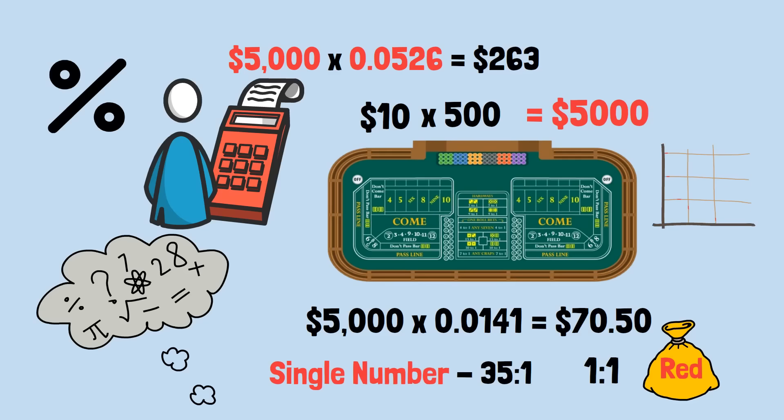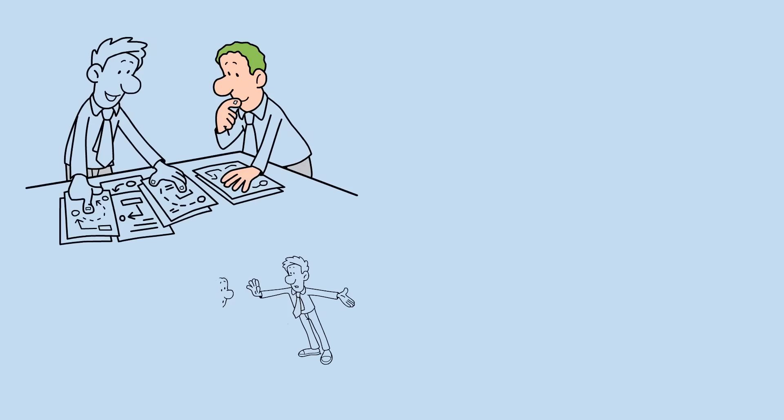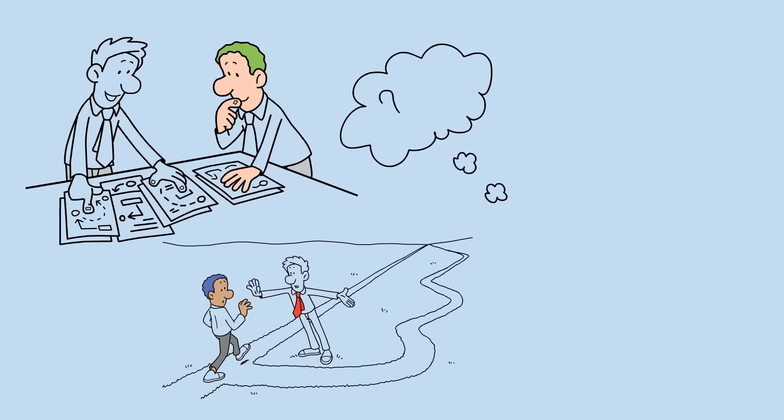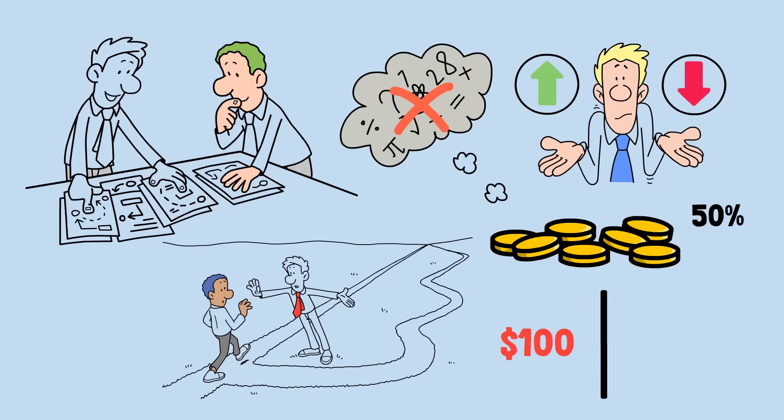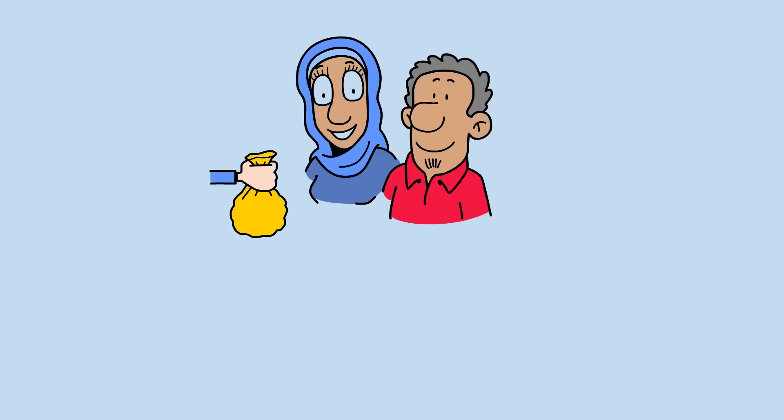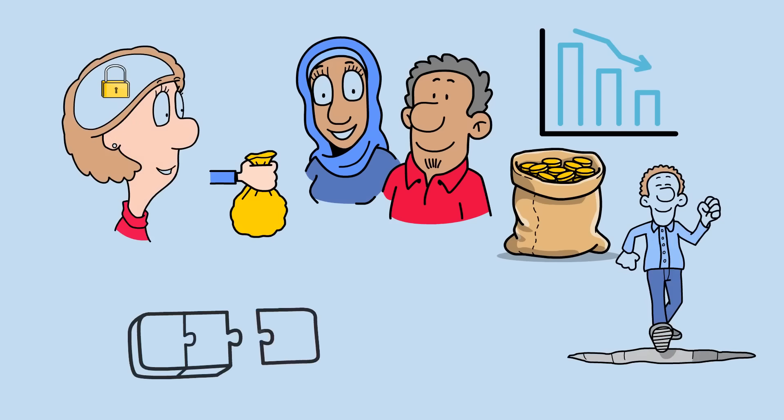Understanding these mathematical principles reveals why different people choose different strategies, often without realizing the mathematical implications of their choices. Bob's all-or-nothing approach gives him the best odds of achieving his specific goal, nearly a 50% chance. But it also guarantees he'll either win $100 or lose $100 with no middle ground. Alice and Carlos, despite their vastly different bankrolls, both chose strategies that almost guarantee failure. Their conservative approach feels safer psychologically, but mathematically, it's far riskier than Bob's bold bet. This psychological disconnect between perceived risk and actual risk is one of the most important insights from casino mathematics.